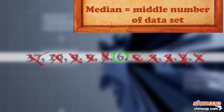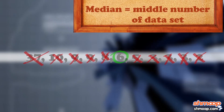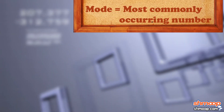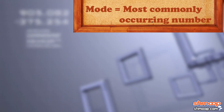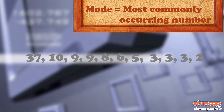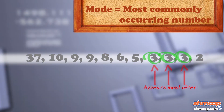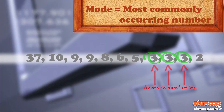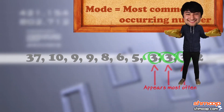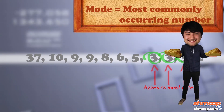And depending on what you're looking for, you may also be interested in finding the mode, which is just the number that appears most often. Which is why we always order our apple pie à la mode.